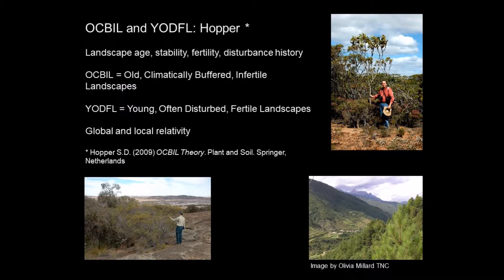There are global and local relativities in the OCBIL/YODFIL framework. The reference for Steve Hopper's work is provided. There's a picture of Steve Hopper standing underneath a tree he and I named in 2009 called Eucalyptus brandiana, named after Grady Brand, curator of the Botanic Garden at Kings Park. Another picture shows a very old bit of landscape — Mount Caroline in the central wheatbelt — with young Ben Lullfitz standing next to Eucalyptus caesia. A third image by Olivia Millard shows a mountain range in China with a big river valley and conifer forest.